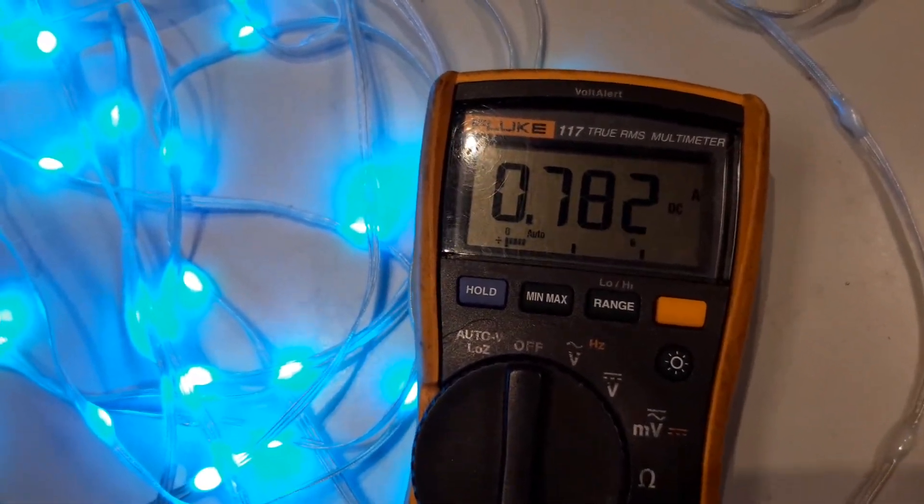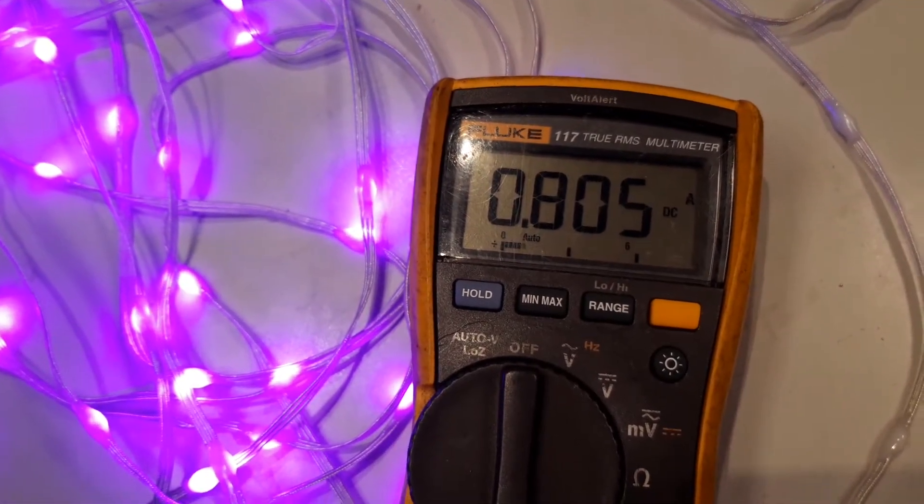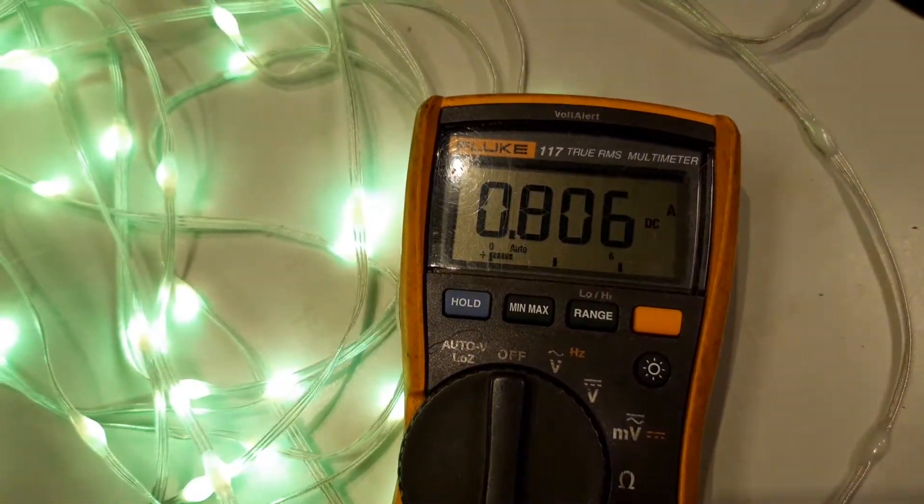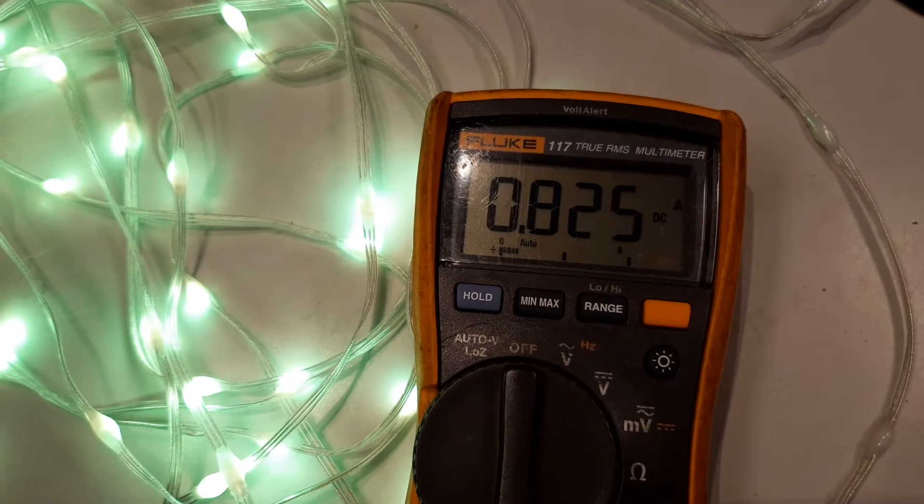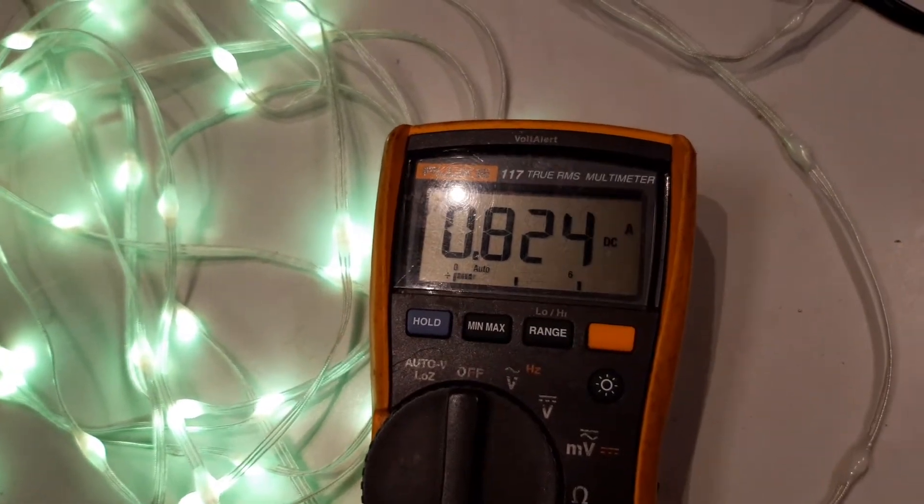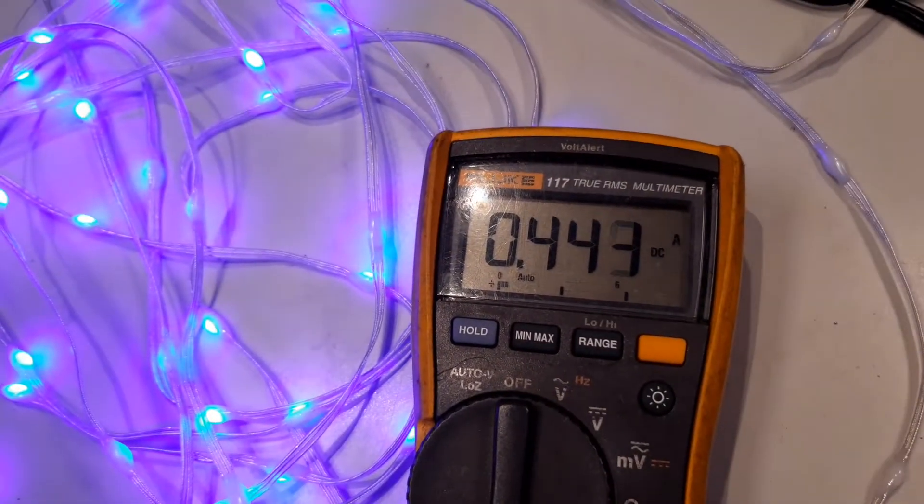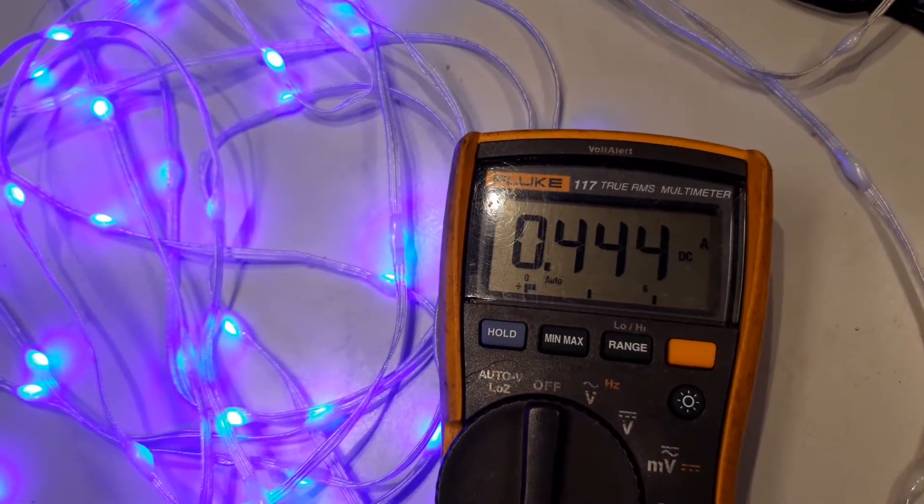If I change colors now, this is two colors on, a couple of colors. So it drops to 0.7 to 0.8 of an amp. Those three are all just two colors on, various colors there.